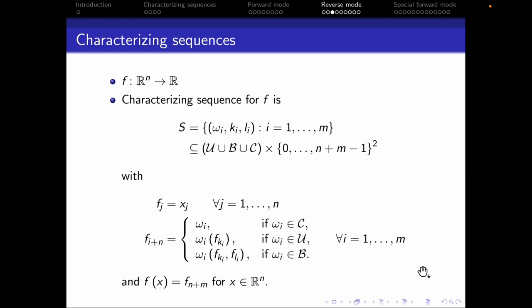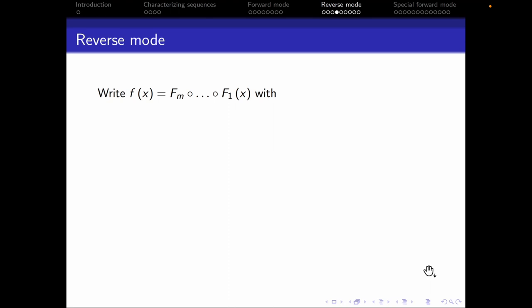If this explanation was too fast or you're confused, go ahead and watch the previous video on forward mode. But let's continue. What's the idea of reverse mode? The idea is basically to write f as a composition of the functions fm all the way down to f1 — a composition of m functions.